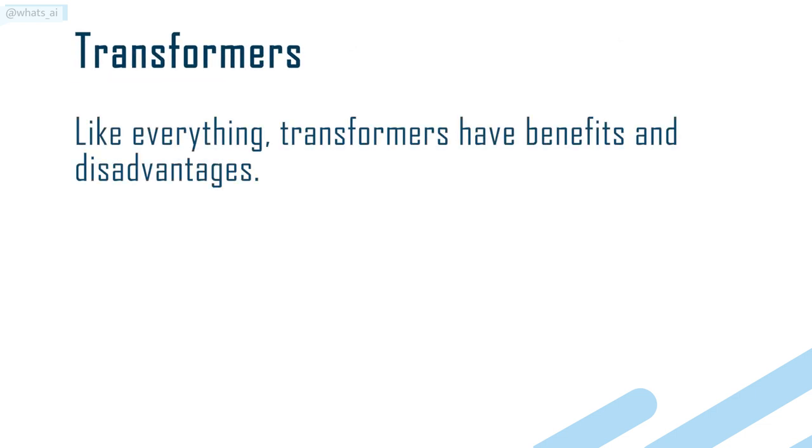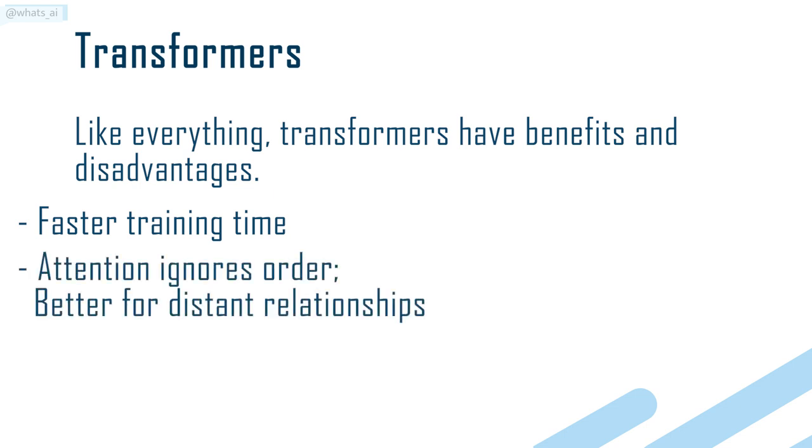Like everything, transformers have benefits and disadvantages. They have faster training time than RNNs if you have access to sufficient compute because of the parallelization. Plus, the attention mechanism ignores order, which means that it is as easy to detect relationships between very distant items as it is to detect relationships between close items in a sequence.